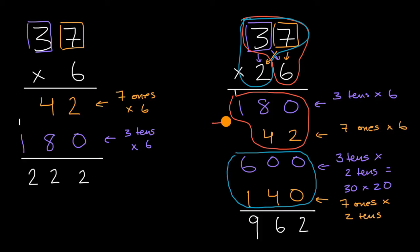Let me write that down. This whole thing I'm circling in orange is 37 sixes, or 37 times 6. And this is 37 twenties, or 37 times 20.